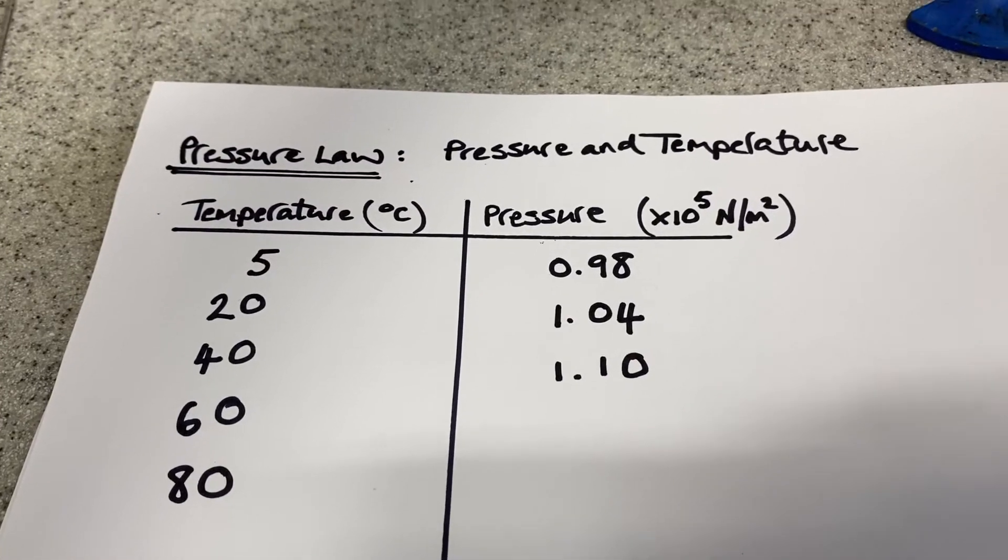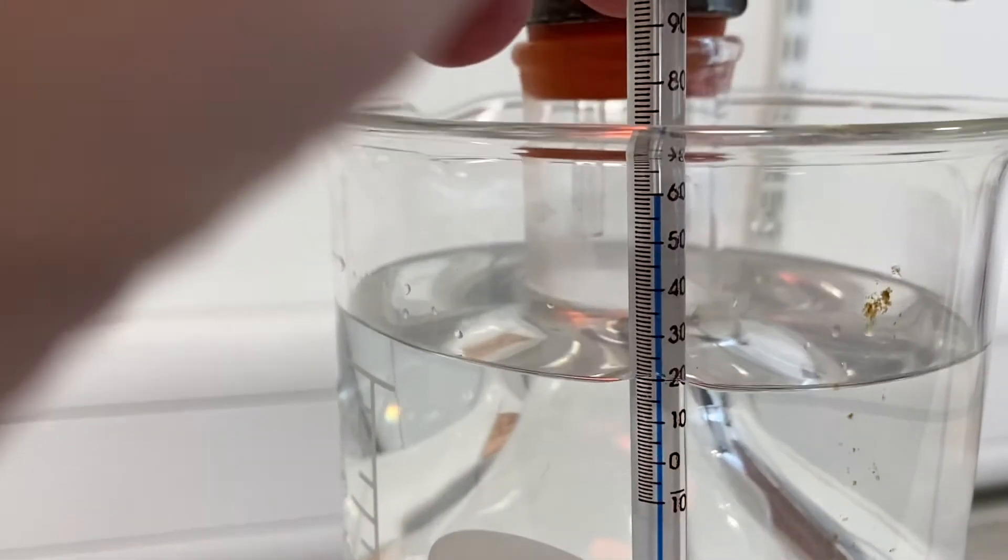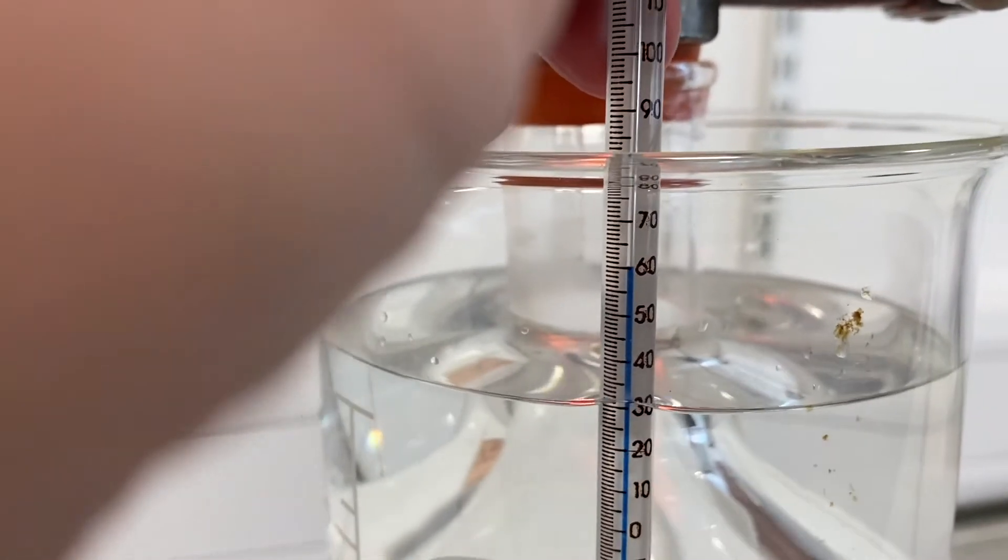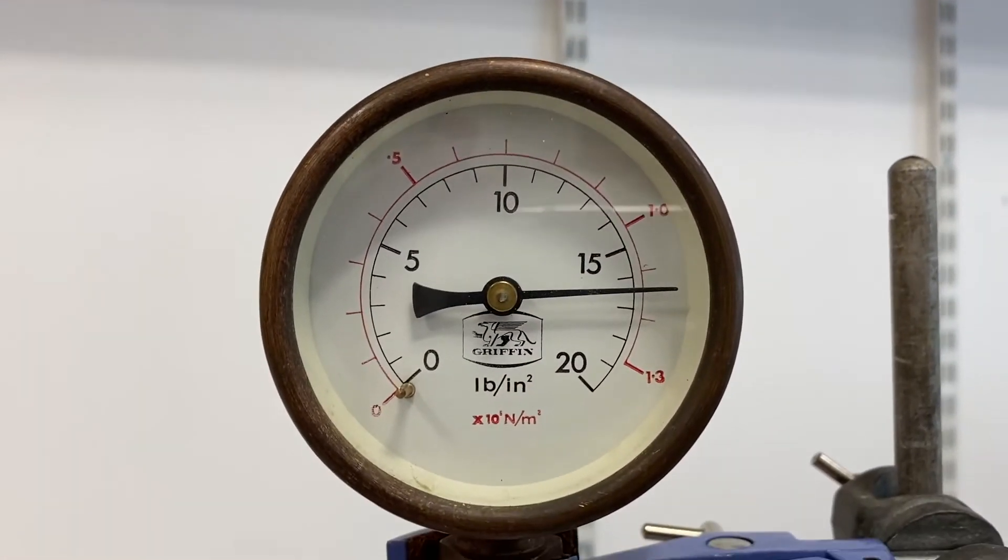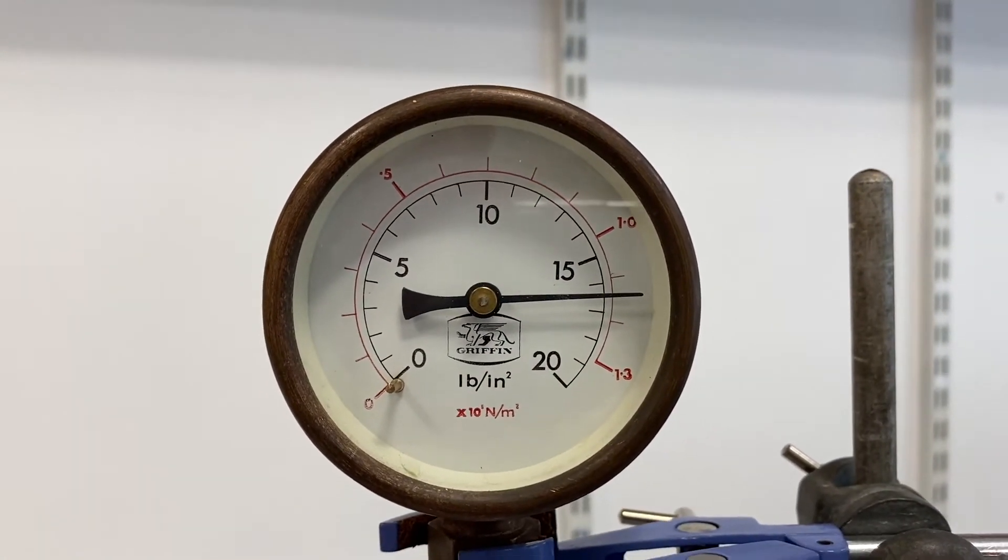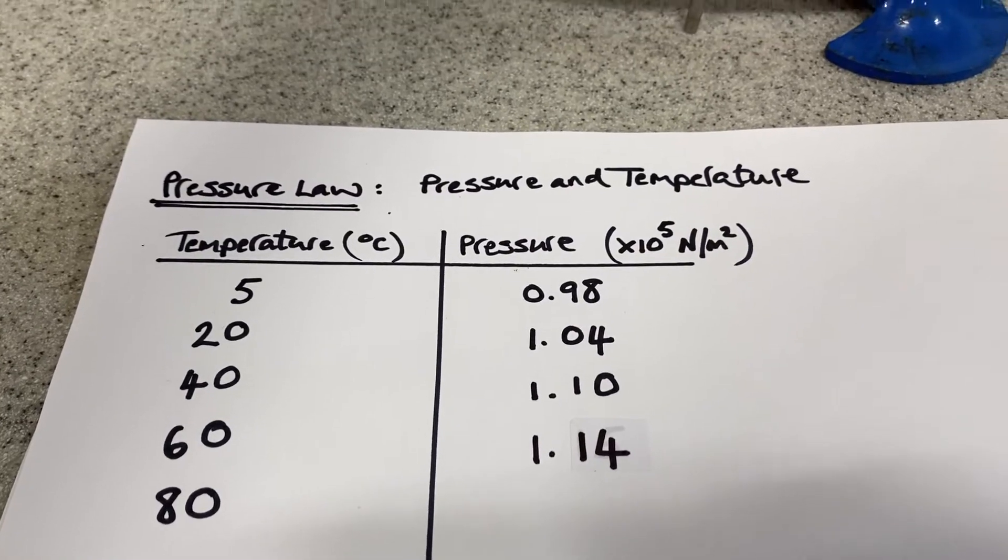Let's keep heating up to 60 degrees, and that's 60 degrees, our pressure is, let's tap again, 1.14 times 10 to the 5 newtons per square metre.